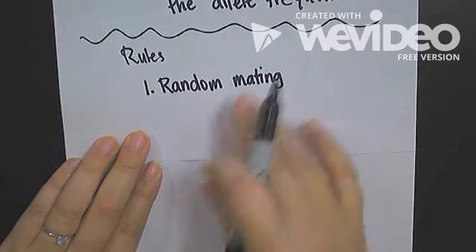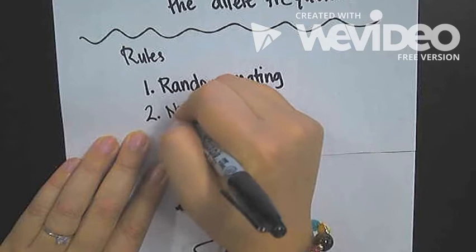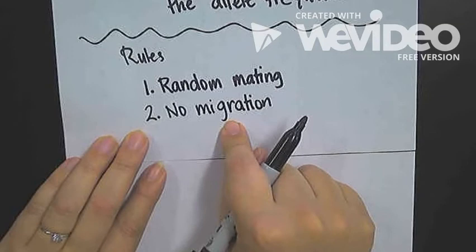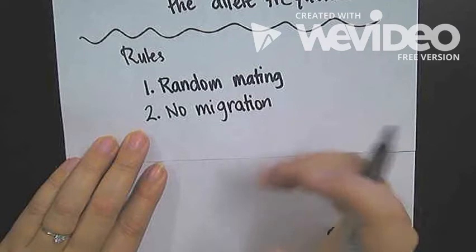Otherwise, you go out of equilibrium. Number two, no migration. In order for our population to be in Hardy-Weinberg equilibrium, you can't have individuals leaving in the middle of our simulated lab, and we also did not have individuals coming in during our lab.